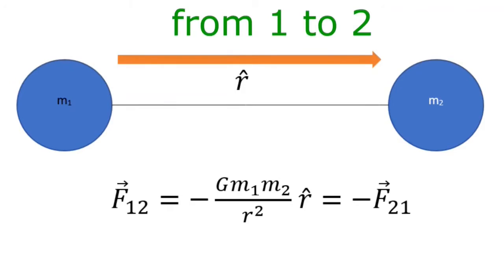F12 is the force exerted by body 1 on body 2, and F21 for the opposite case. Small m1 and small m2 are the masses of bodies 1 and 2, and small r is the distance between the two bodies.